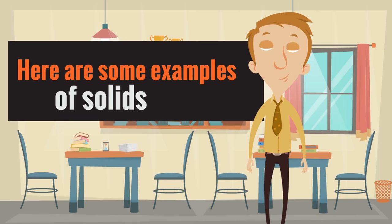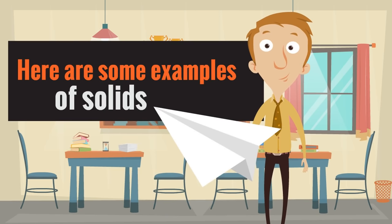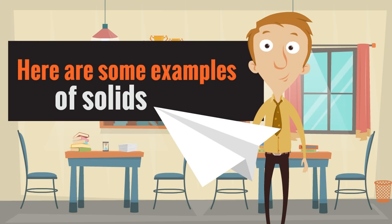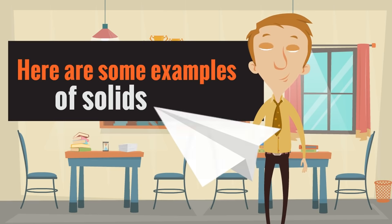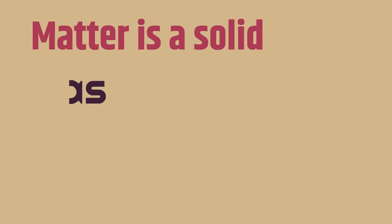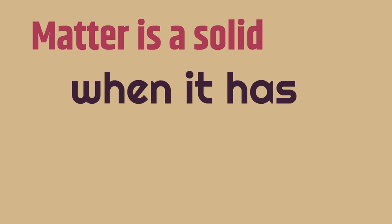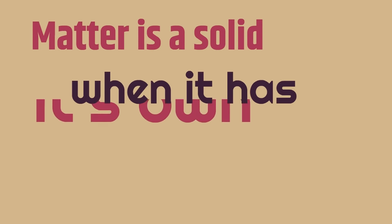Oh, I love making these. A paper airplane is an example of a solid. It is matter that has its own shape. It's a solid. Matter is a solid when it has its own shape.